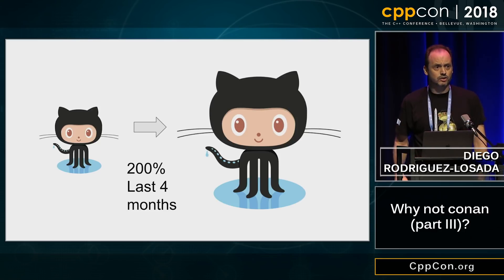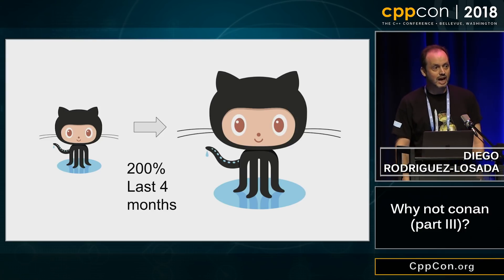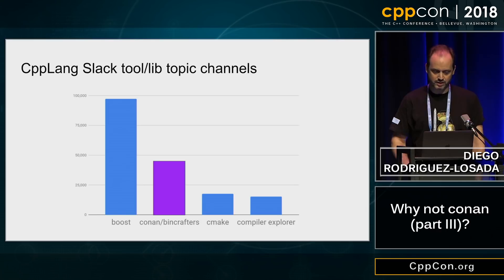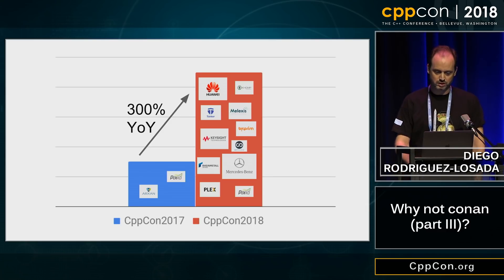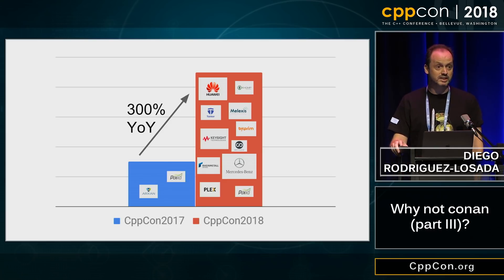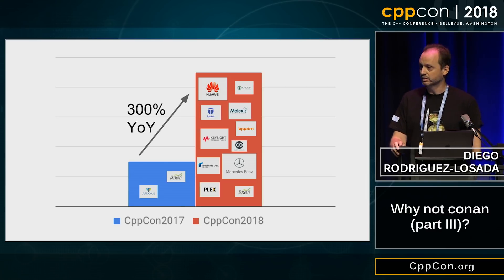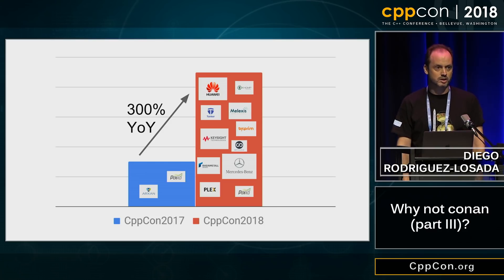But I also got some data from the internet. The GitHub activity doubled in the last four months — that means thousands of notifications in the inbox of the Conan team per month. Conan is the second most active topic in the Slack, besides the C++ core language topic, of course, behind Boost. Last year I was saying that there were hundreds of companies using Conan in production. That number has tripled this year. Now there are many, many companies using Conan in production.